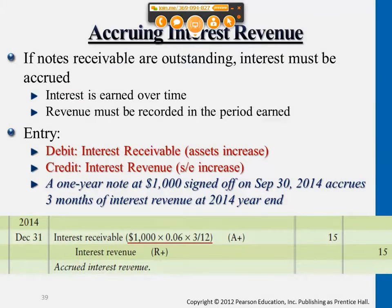This entry talks about accruing interest at year end. We usually journalize this entry if certain notes carry on to the following accounting period. So if we sign off a note December 1st, 2013, and this is a note with a time frame of six months, it will carry on to the following accounting period.